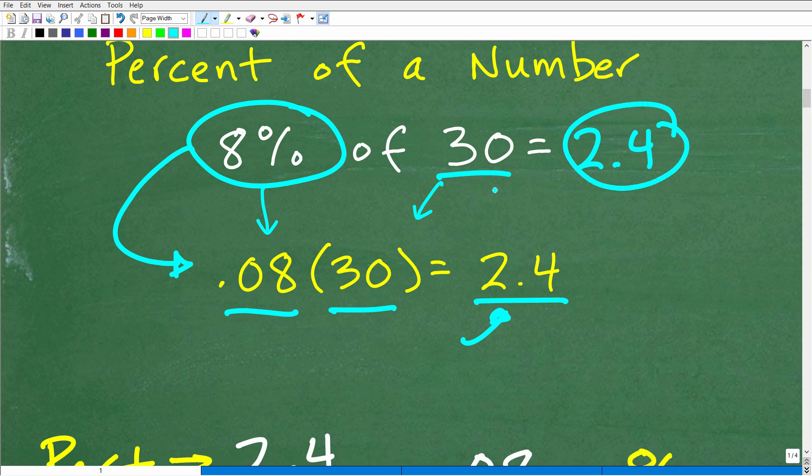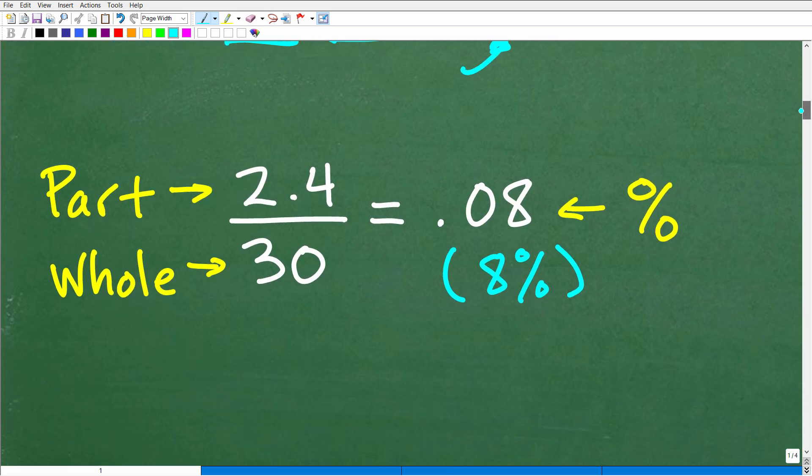We're saying, 2.4 is 8% of 30, or 8% of 30 is 2.4. So we're saying the same information, just organizing it differently. So 2.4 out of 30 is 0.08, which is the same thing as 8%. Oftentimes, when you are dealing with percent problems, you want to keep in this model if you're trying to find what percent is a number out of another number. You want to be thinking of a part out of a whole, because that is a really good conceptual model in terms of percent.